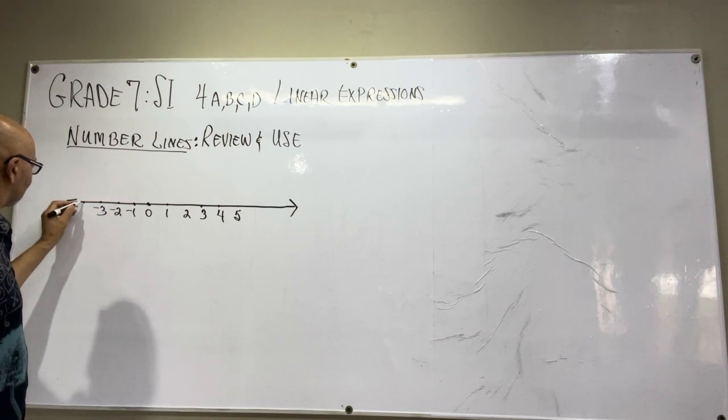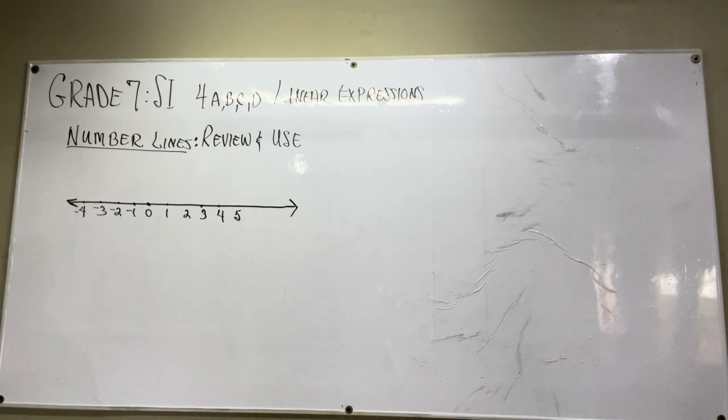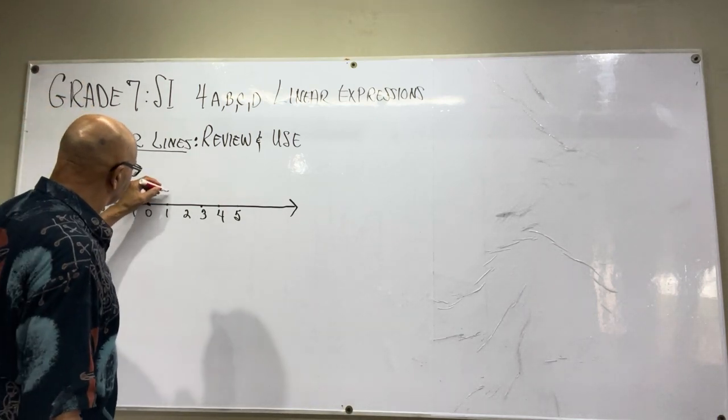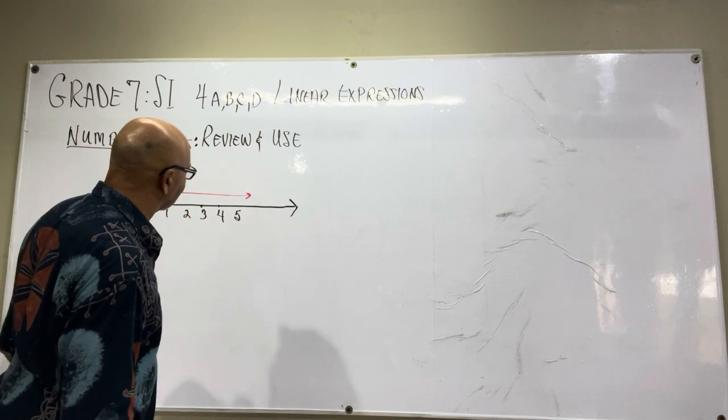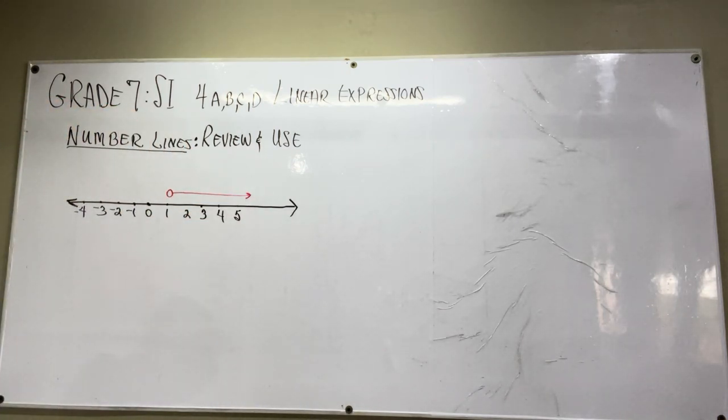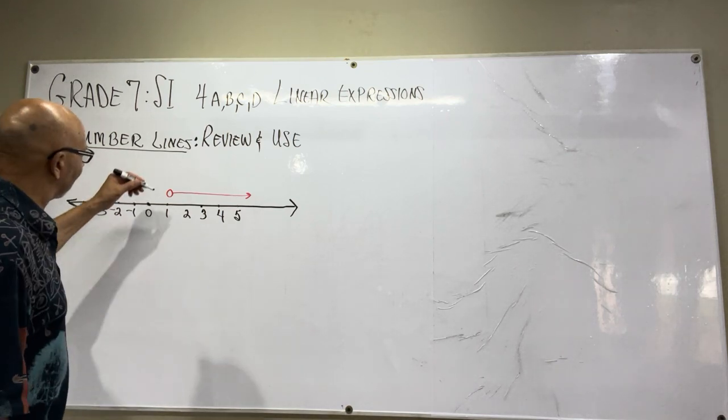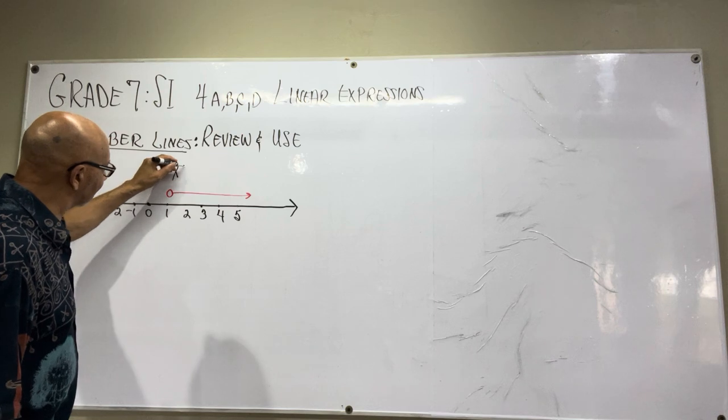Now, you will often see, because they will certainly test your knowledge on this, they may show you something like this and ask you to interpret what that means. This indicates that the value of something is more than one. So let's say we're talking about x, whatever x is, x is greater than one.